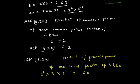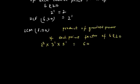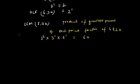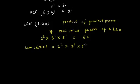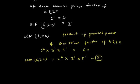This gives us 60. So the LCM of 6 and 20 is equal to 2 raised to the power 2 multiplied by 3 raised to the power 1 multiplied by 5 raised to the power 1, which is 60. Let's call this equation 2, and the HCF result equation 1.